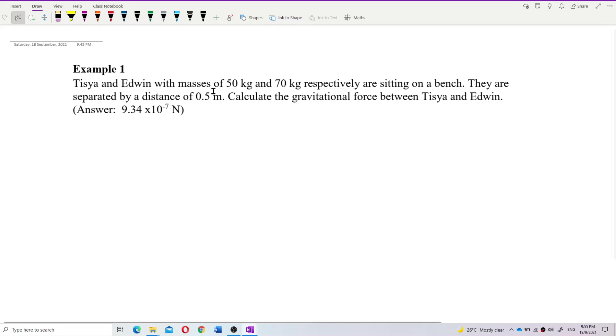Tisha and Edwin with masses of 50 kilogram and 70 kilogram respectively are sitting on a bench. They are separated by a distance of 0.5 meter. Calculate the gravitational force between Tisha and Edwin.